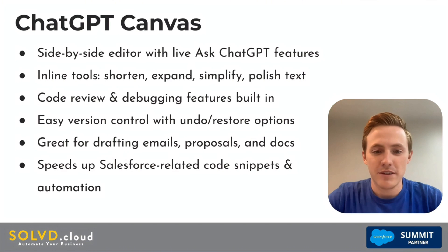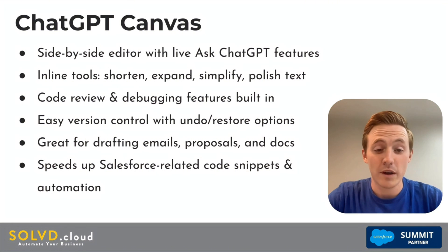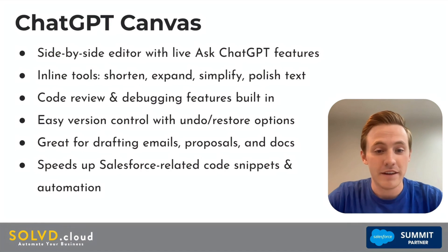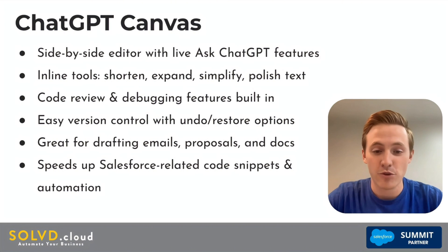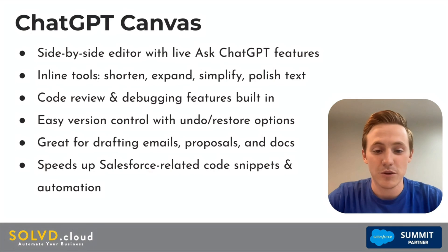To highlight some of ChatGPT's Canvas features: we have the side-by-side editor with the Ask ChatGPT functionality, inline tools to shorten or expand content, and the ability to adjust reading level. When it comes to coding, there are also different tools in that bottom right-hand corner — it provides code review and has debugging features built in. And we have version control, so we can undo and restore different past canvases. It's great for drafting emails, coding, and overall business productivity.